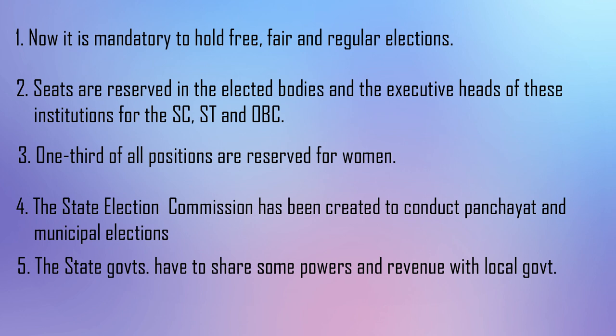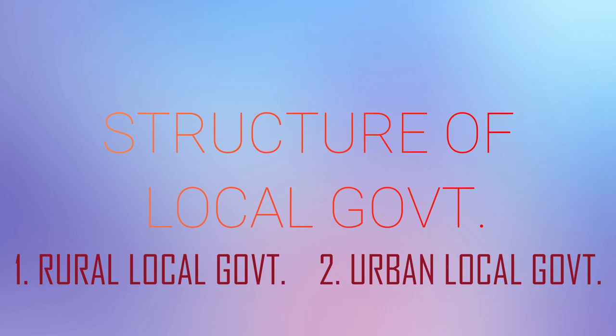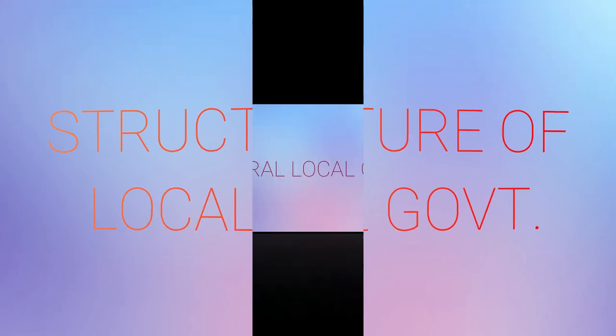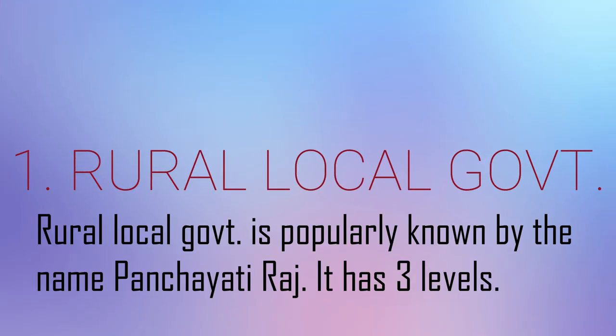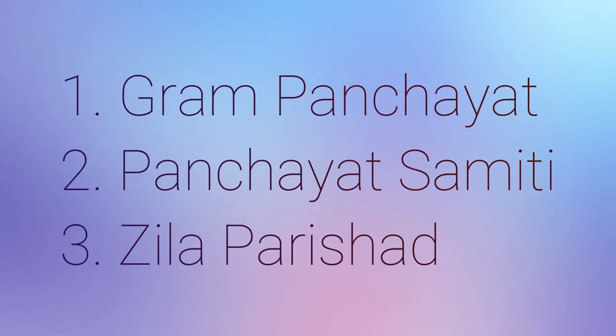Our next topic is the structure of local government. There are two types: rural local government and urban local government. Rural local government is popularly known as Panchayati Raj. It has three levels: village level called Grama Panchayat, block level called Panchayat Samiti, and district level called Zila Parishat.